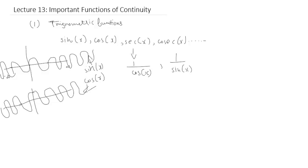That's sine of x, and this is cosine of x. Just think about it for a second. These will be continuous throughout. If you talk about secant x and cosecant x, what do you think about these functions? Are they continuous or not?